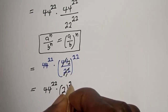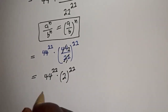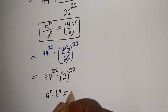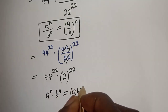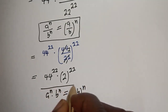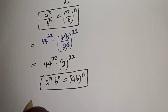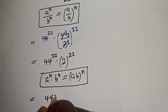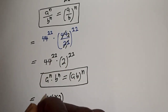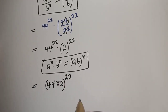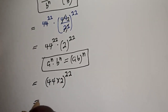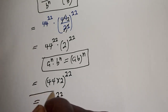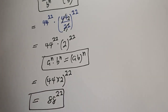If you have a raised to power n multiplied by b raised to power n, this is equal to ab raised to power n. So this equals 44 multiplied by 2 raised to power 22, and 44 times 2 is 88, giving us 88 raised to power 22 as the final answer.